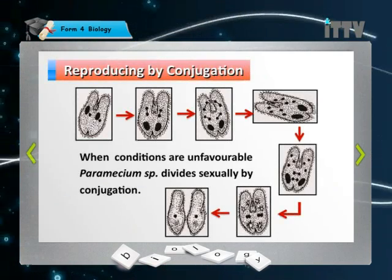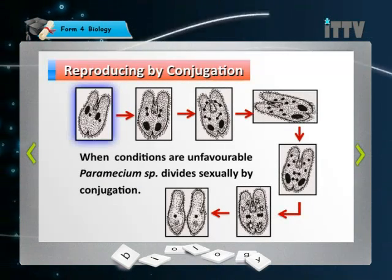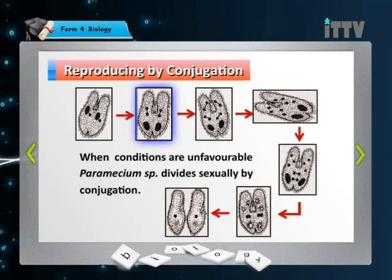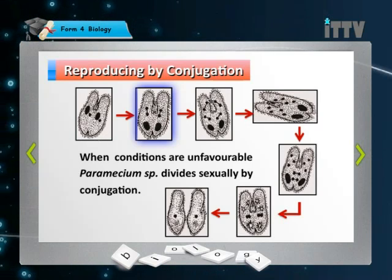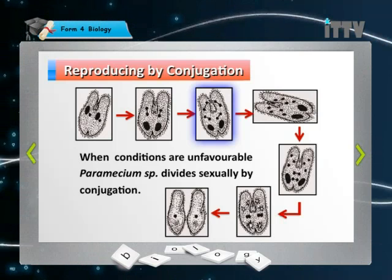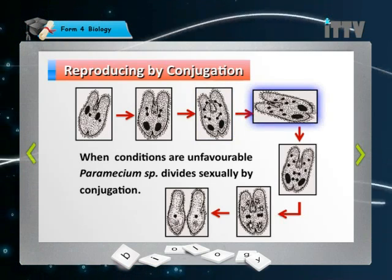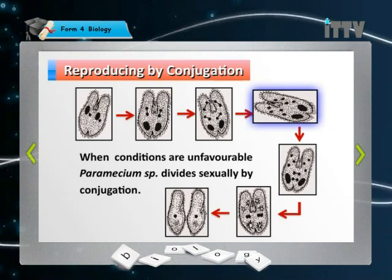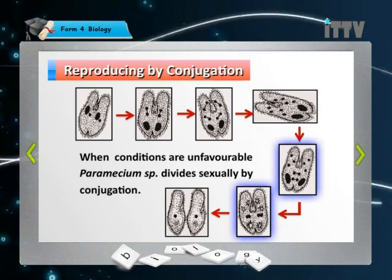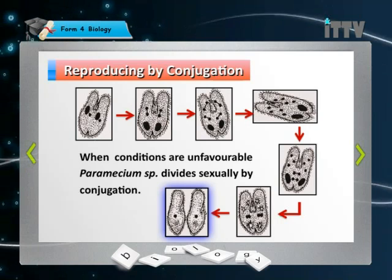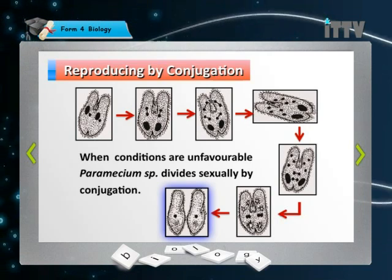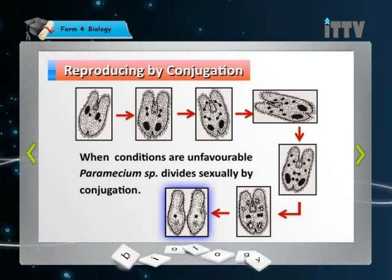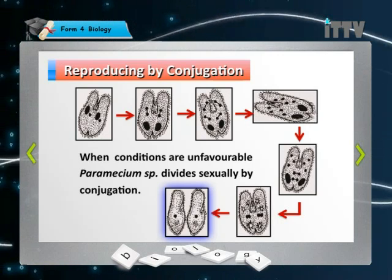Now let's see the sexual version — conjugation. In diagram 1, two Paramecium come close to each other. In diagram 2, they exchange materials from the nucleus. In diagram 3, the nucleus has already divided and exchange of materials is almost complete. Once exchanged, the nuclei join back together. In diagrams 4 and 5, the cytoplasm and plasma membrane divide, and finally in diagram 6 two individual Paramecium are formed, each with different genetic content compared to their parent. This only occurs in unfavourable conditions.